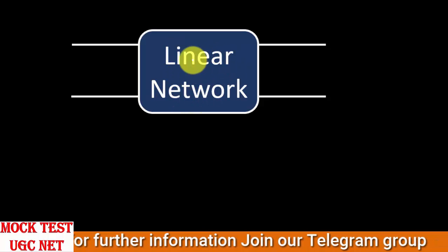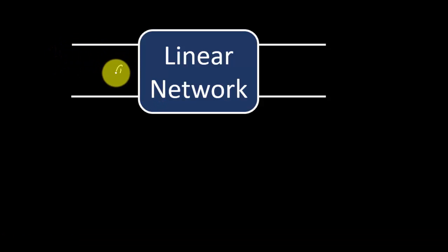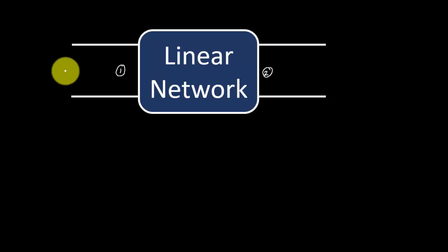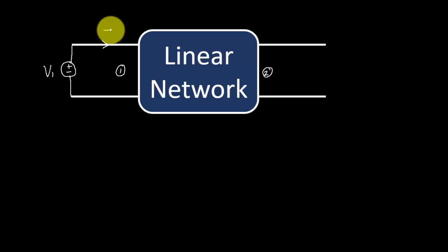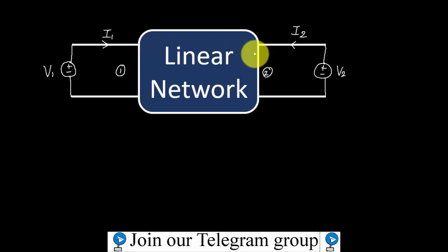Consider this linear network — what is inside this network, I don't know. In order to determine the response of this network, I am going to excite voltages. I will call one side port 1 (the input port) and the other side port 2 (the output port). Port 1 is excited by a voltage source V1, with current I1 entering into it. Similarly, on the output port, I connect a voltage source V2, with current I2 entering into the port.